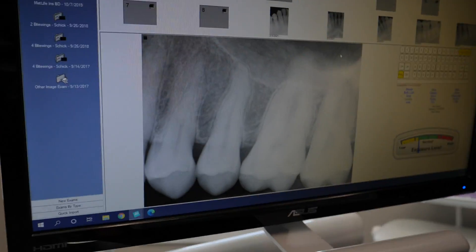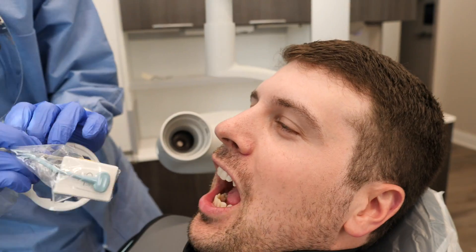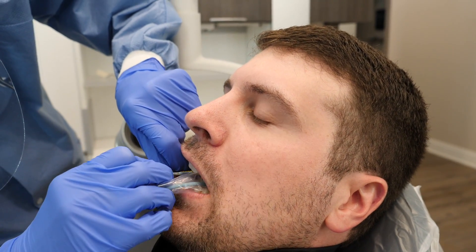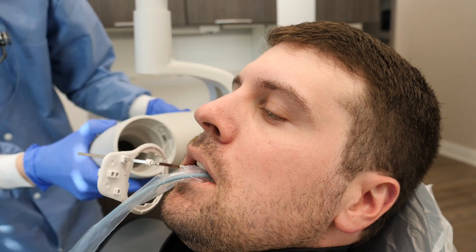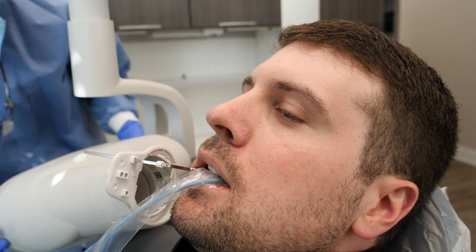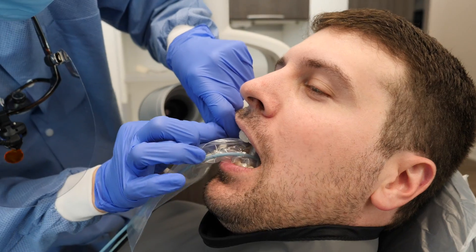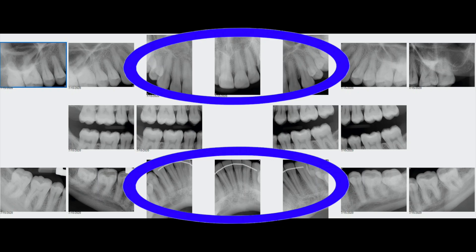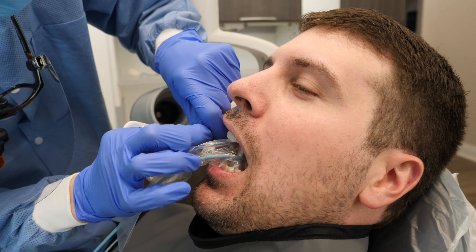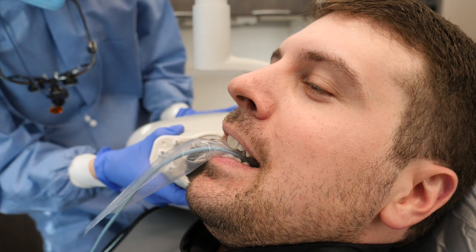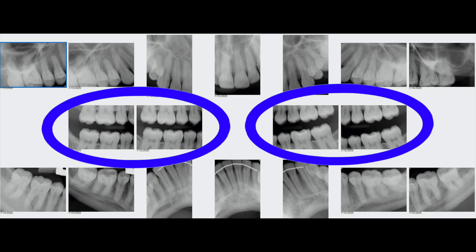Let's watch the remaining images of the posterior PAs be taken. After we finish the PAs we will move on to the bitewings, which you will see at the end. Something to note: most full mouth series x-rays are about 18 images total — six anteriors and eight posteriors — and then we'll finish up this last x-ray and set up for the bitewing x-rays.